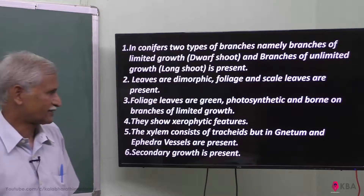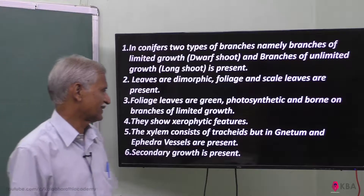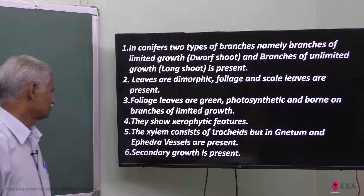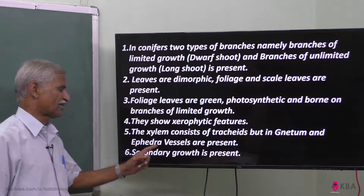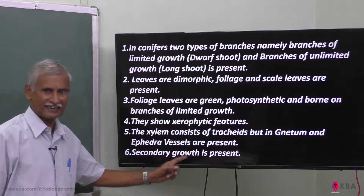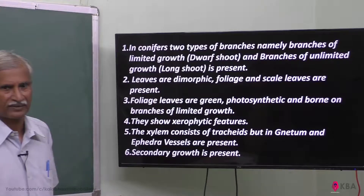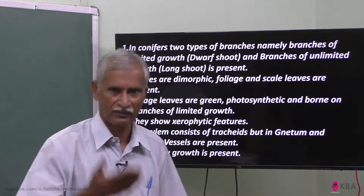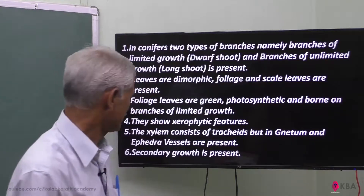But there is one exception: in Gnetum and Ephedra, the two genera do have vessels present. So tracheids in xylem is the general rule, with that modification as an exception.